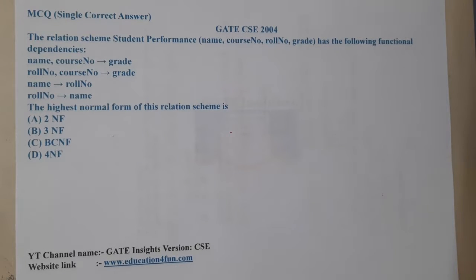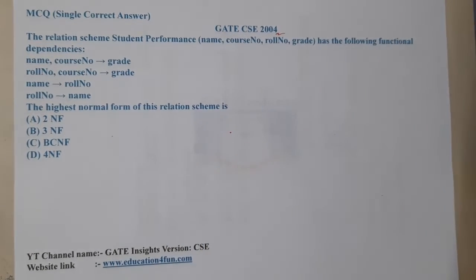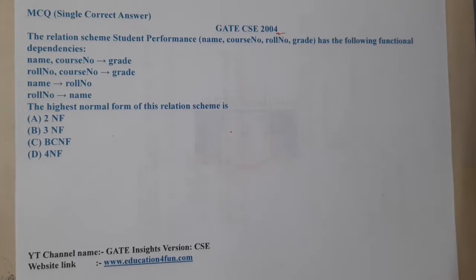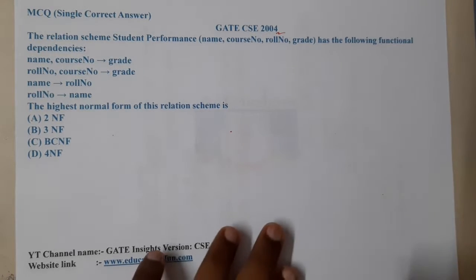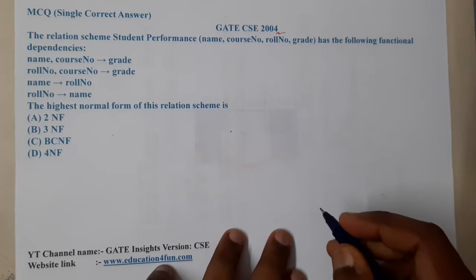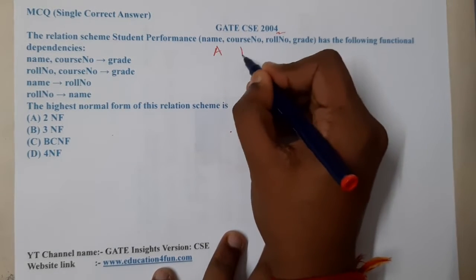Hello, we are back with our next lecture. This question belongs to GATE CSE 2004. The given question involves the relational schema Student Performance, which has four attributes: Name, Course, Roll Number, and Grade. For easy understanding, let us convert them into A, B, C, D format.